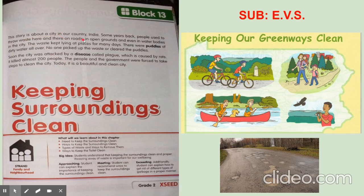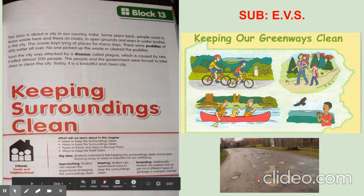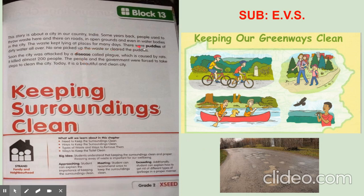This story is about a city in our country, India. Some years back, people used to throw waste here and there — on roads, in open grounds, and even in water bodies in the city. The waste kept lying at places for many days. There were puddles of dirty water all over. No one picked up the waste or cleared the puddles. Soon, the city was attacked by a disease called plague, which is caused by rats. It killed almost 200 people. The people and the government were forced to take steps to clean the city.